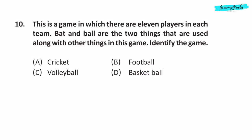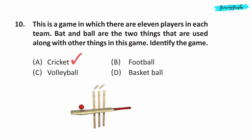Question 10. This is a game in which there are 11 players in each team. Bat and ball are the two things that are used along with other things in this game. Identify the game. The game is Cricket.